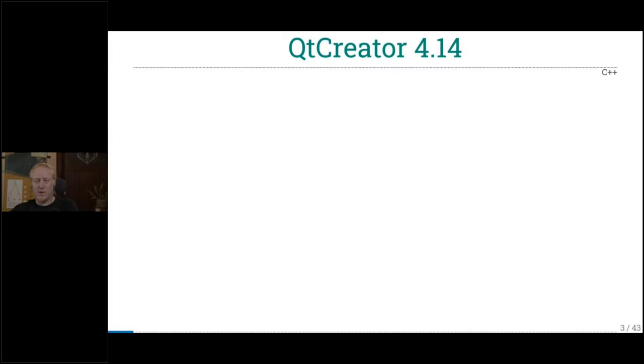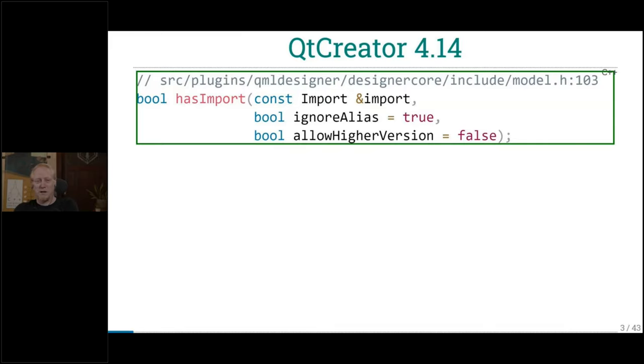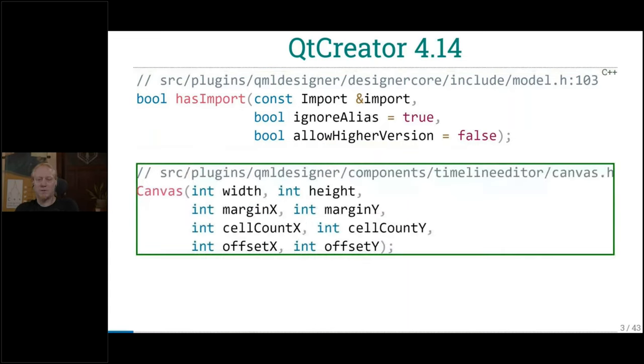Let's start with Qt Creator. Latest version, 4.14. It's a very active developer project, but it's a big project, so it has many, many corners. I don't want to poke anybody's code, so I just searched for some random function signatures, and that's what I came up with. Anything wrong with this method and function signature? Yes. Import is a good name. Not too bad. Import, import. Nice. Then we have two bool arguments.